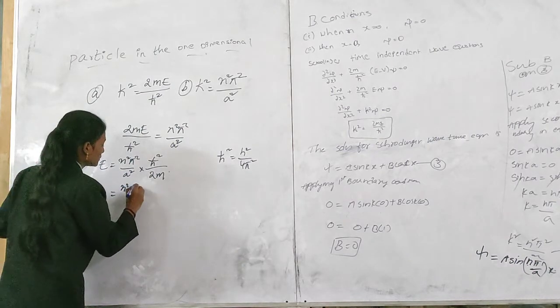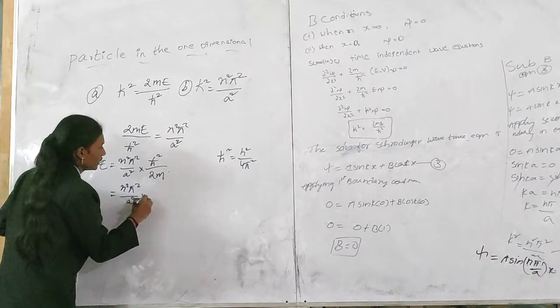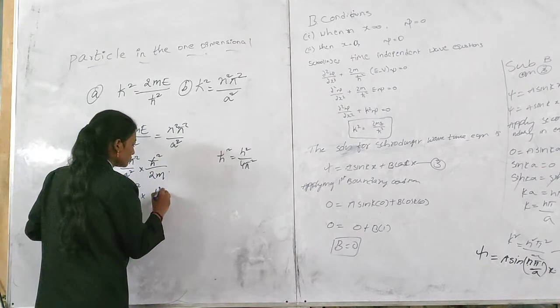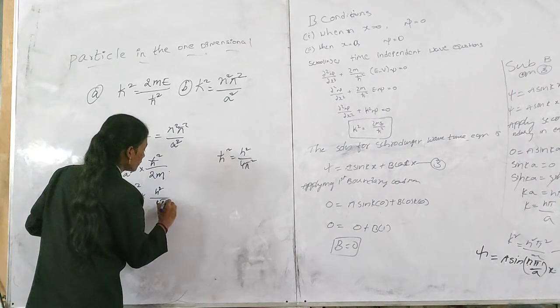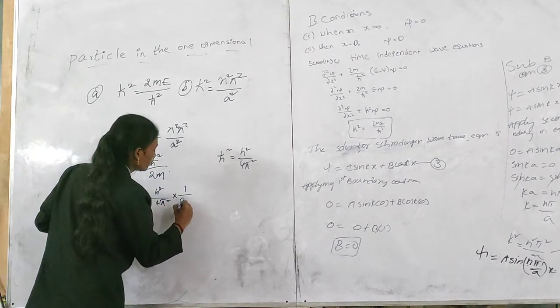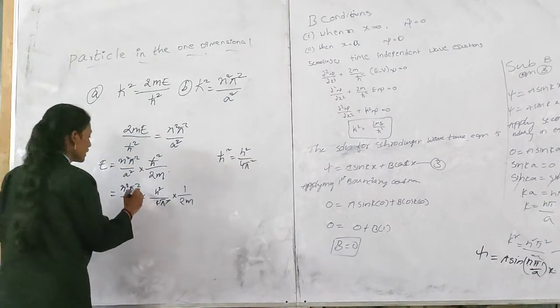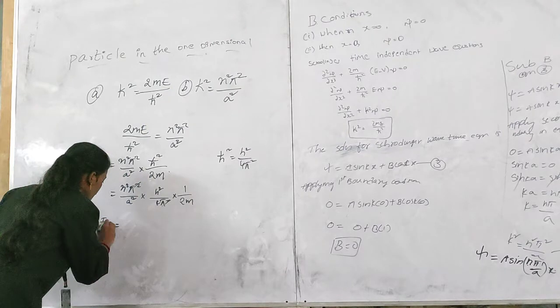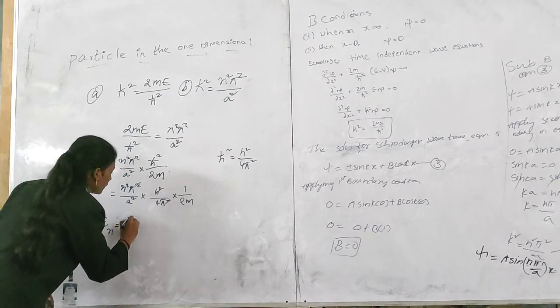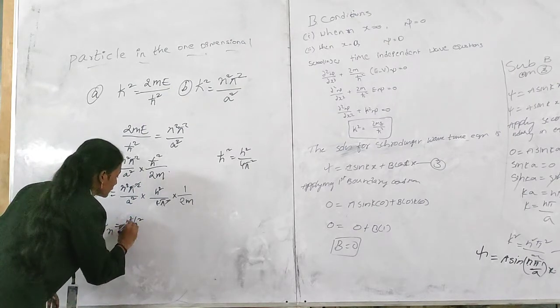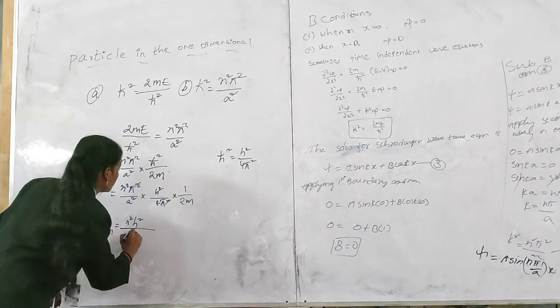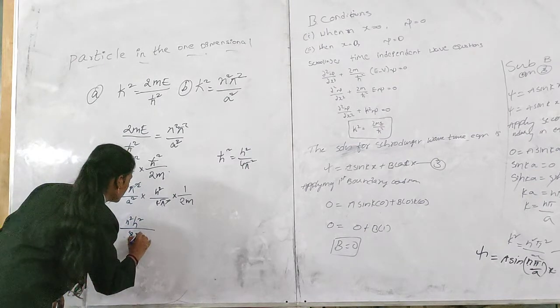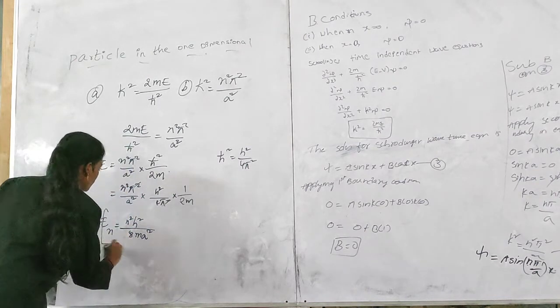So n squared by phi squared by h squared into lambda squared by 4 phi squared into 1 by 2m. So phi squared and phi squared get cancelled. So we have energy of the particle n squared by h squared and squared in h squared by 1 by 2m.